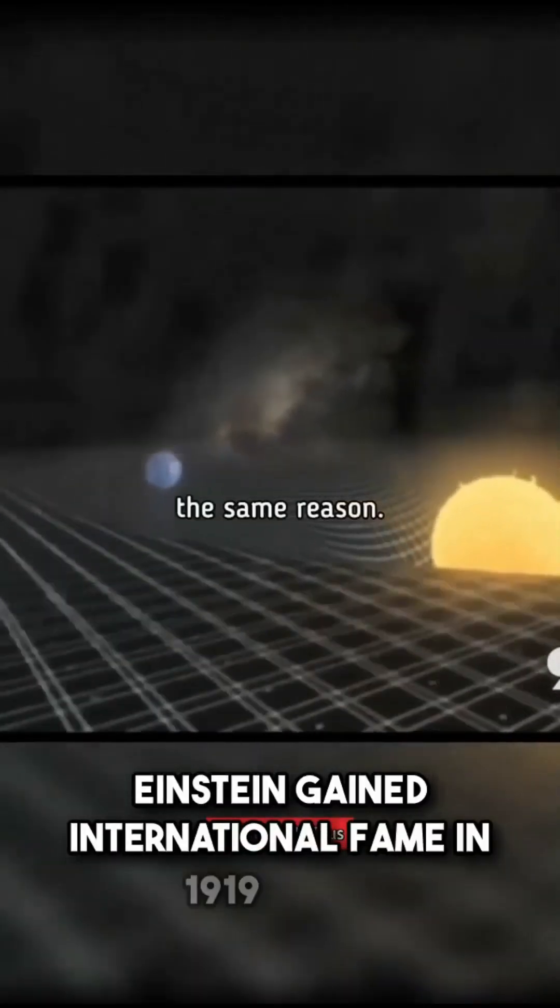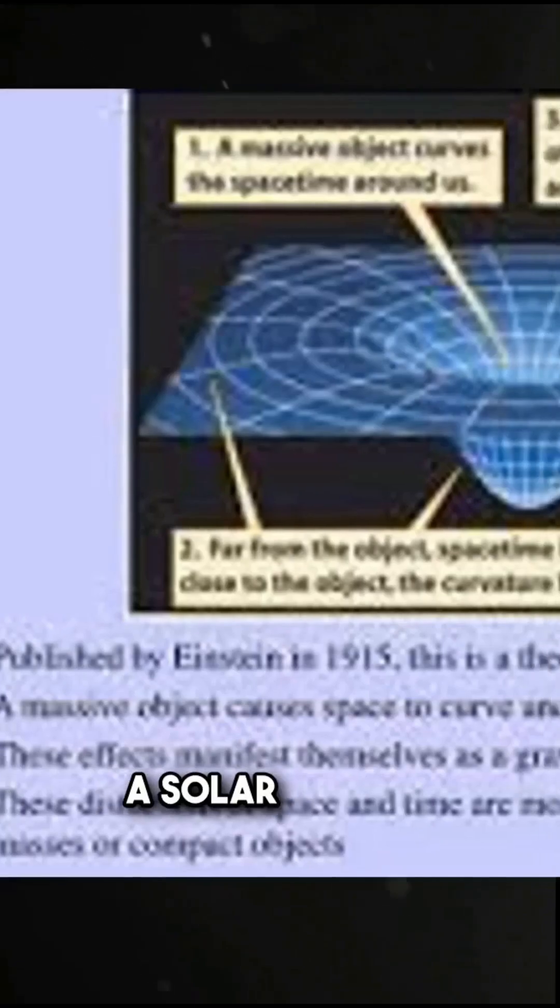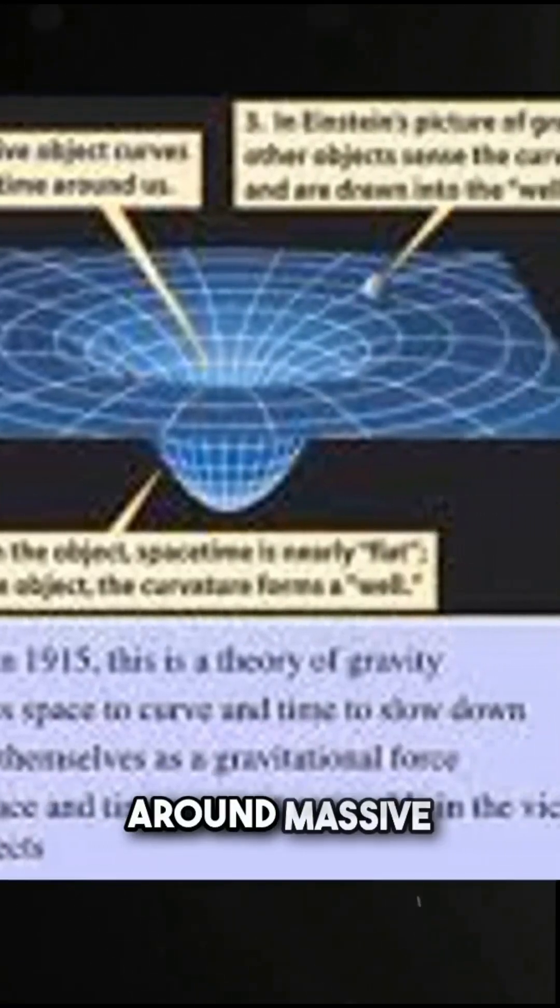Einstein gained international fame in 1919, when his theory was confirmed by observations during a solar eclipse, proving that light bends around massive objects like the sun.